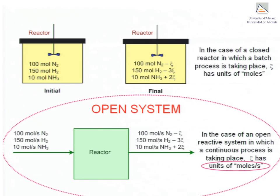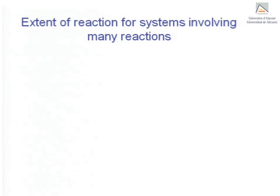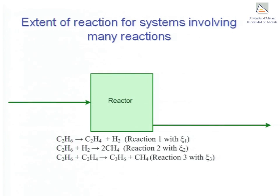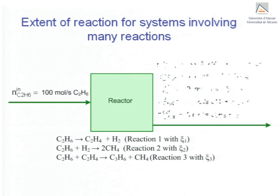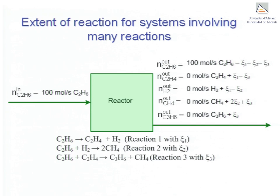Another very important situation arises in the case of simultaneous reactions, where each reaction has associated with it its own extent of reaction. That is, if there are two reactions taking place at the same time, there will be two extents of reaction; if there are three reactions, there will be three extents of reaction, and so on. For the particular situation shown, imagine that in this continuous reactor there are three reactions taking place. A materials balance on each component, where the reactor is fed 100 moles per second of ethane, gives the output molar flow rates as a function of the three extents of reaction and their stoichiometric coefficients.